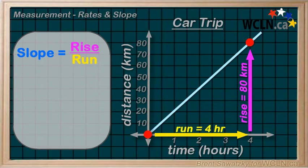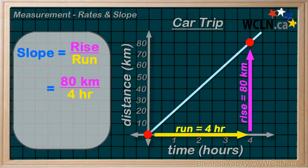So we plug these into our slope equation: 80 kilometers over 4 hours. To make it a unit rate, we can divide them out. 80 divided by 4 is 20.